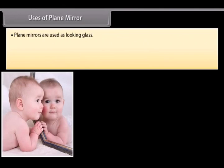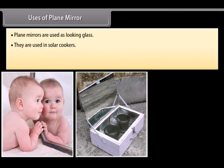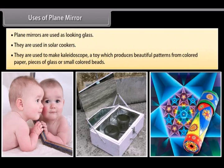Plane mirrors are used as looking glass. They are used in solar cookers. They are used to make kaleidoscope, a toy which produces beautiful patterns from colored paper, pieces of glass, or small colored beads.